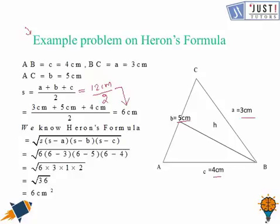Now we know that Heron's formula is S times S minus A times S minus B times S minus C. So the value of S is 6. So S is 6, S minus A is 6 minus 3 which is 3, S minus B is 6 minus 5 which is 1, S minus C is 6 minus 4 which is 2. So this is going to be 36. And we can write 36 as under root 6 times 6. So the answer is 6 cm square.